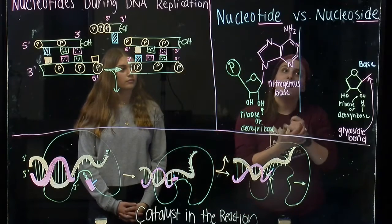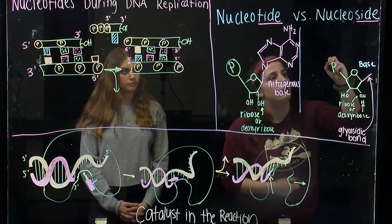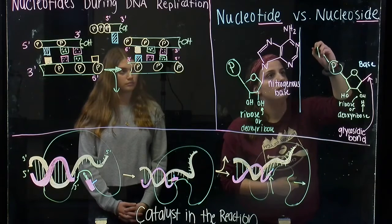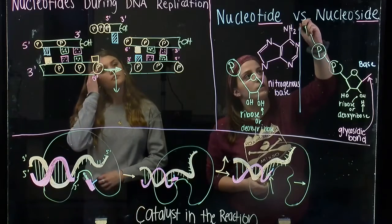And to go to a nucleotide to a nucleoside diphosphate, you add two phosphate groups. And to get a nucleoside triphosphate, you just add a third phosphate group.